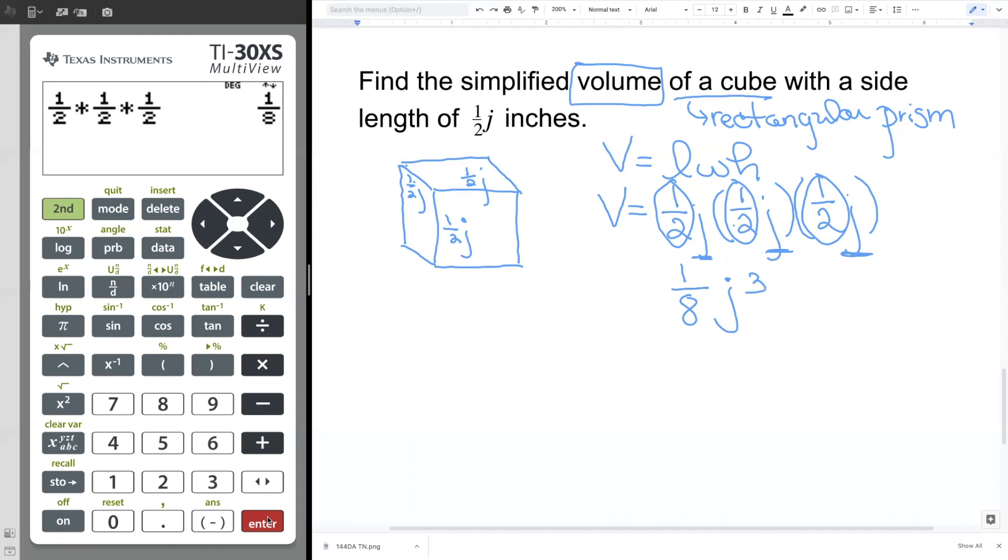Now, we're just finding the simplified volume. I'm just going to write this as my answer. One-eighth J cubed. That is the volume. Now, of course, I can say the volume is, now I'm speaking in a complete math sentence, but it's that other side there. That's the simplified volume. One-eighth J cubed.